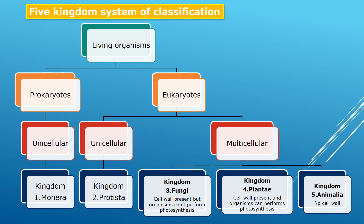Fungi are heterotrophs and cannot perform photosynthesis. In kingdom Plantae, a cell wall is present and plants perform photosynthesis because they prepare their own food — they are autotrophic. Kingdom Animalia is also heterotrophic, as animals depend on other animals or plants for food. Kingdom Animalia has no cell wall. Let us now see all these kingdoms in detail.